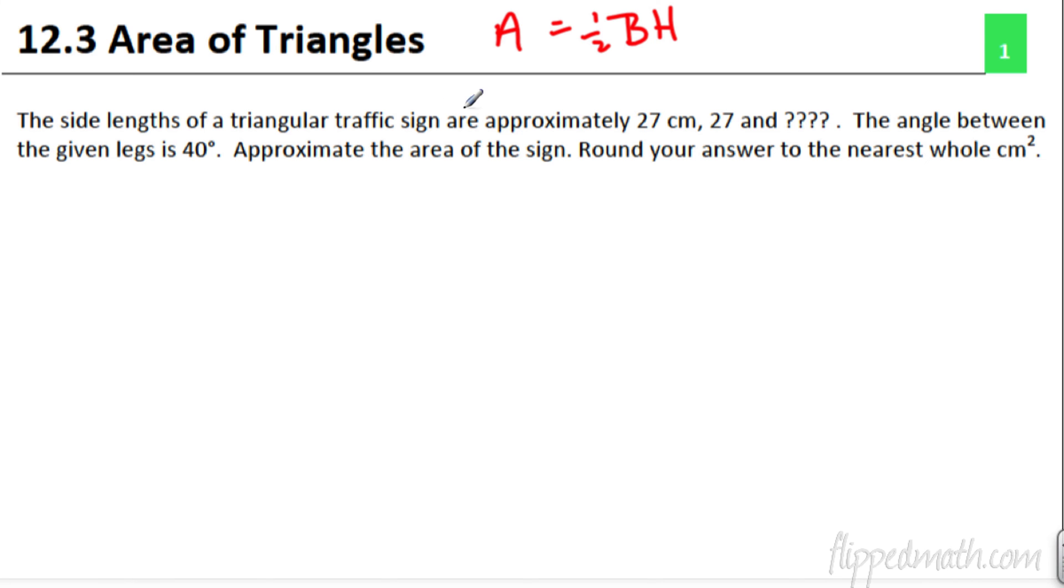The side lengths of a triangular traffic sign are approximately 27, 27, and we don't know. The angle between the given legs is 40 degrees. Approximate the area of the sign. We can do that. Round your answer to the nearest whole centimeter squared.